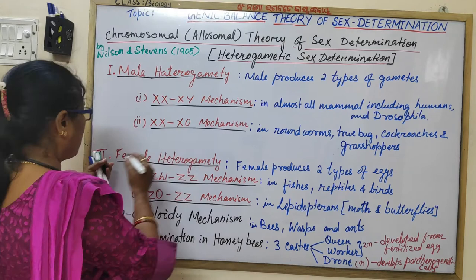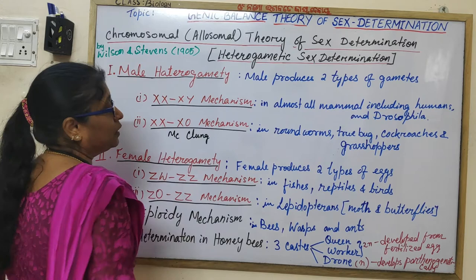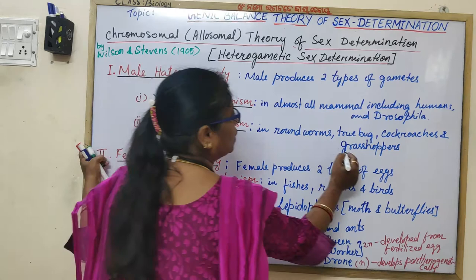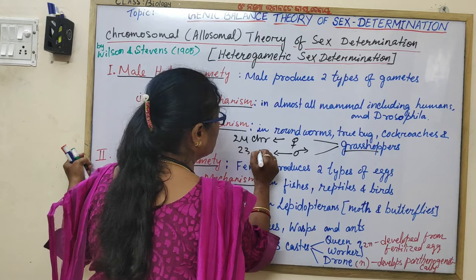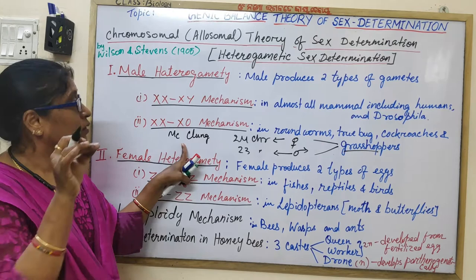McClung observed that in female grasshoppers there are 24 chromosomes, whereas in male grasshoppers there are only 23 chromosomes. From this he established that the chromosome, specifically the number of chromosomes, determines the sex of the individual.